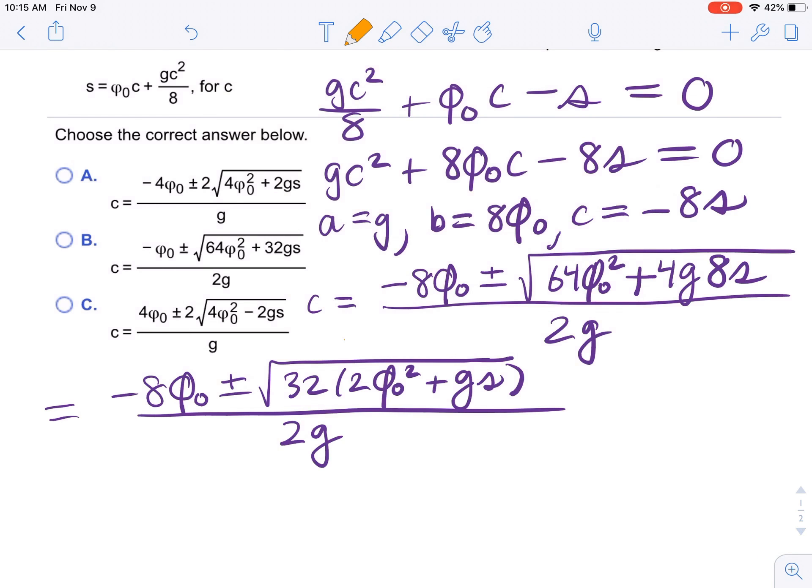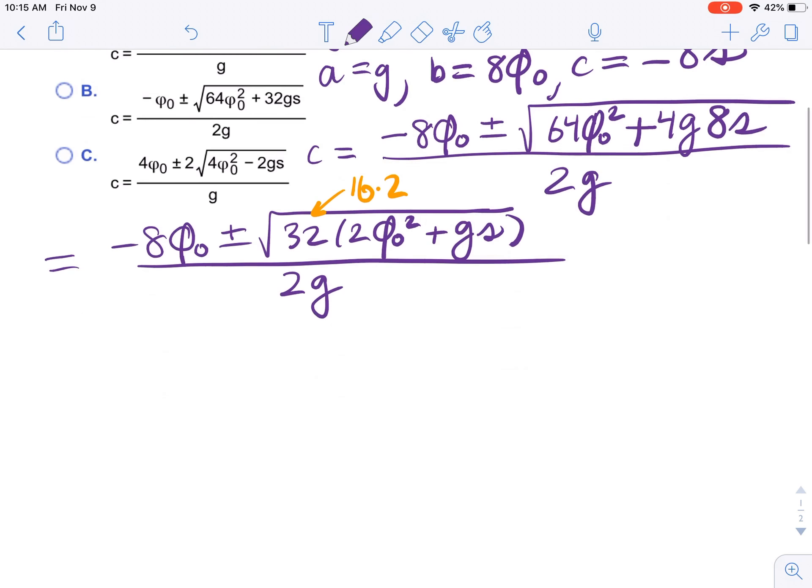Now notice something about that 32. 32 is 16 times 2, and 16 is a perfect square. What's the square root of 16? 4. So negative 8v sub 0 plus or minus 4, let's distribute the 2 back in, that remaining 2, 4v sub 0 squared plus 2gs divided by 2g.